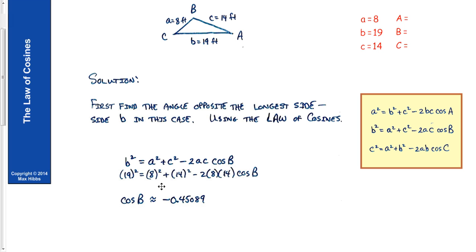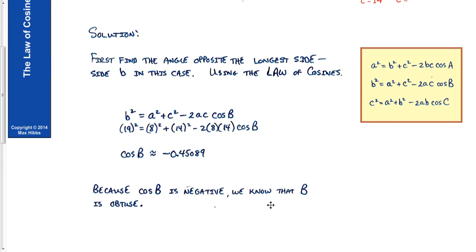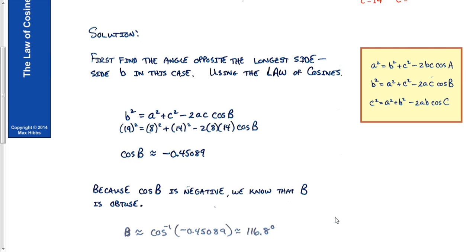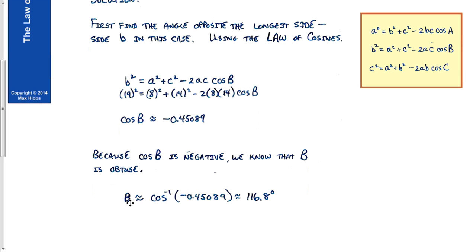Using the second version of the law of cosines: 19 squared equals 8 squared plus 14 squared minus 2 times 8 times 14 times cosine B. Solving gives us the cosine of B as a negative value, which tells us right away that B is an obtuse angle — it's in the second quadrant. Using the inverse cosine function gives B approximately equal to 116.8 degrees.